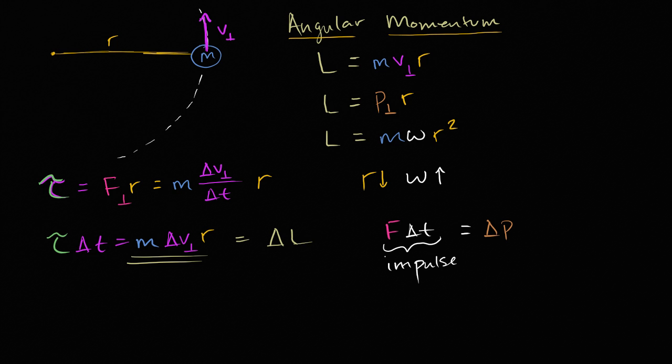So if you're not applying any torque, if your torque is zero, if your torque is equal to zero, well that means that your delta L is zero, your angular momentum is not changing, or you could say your angular momentum is constant.